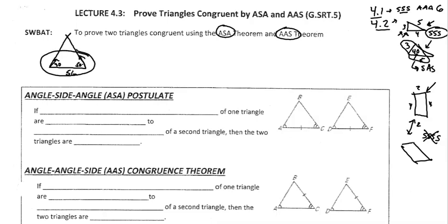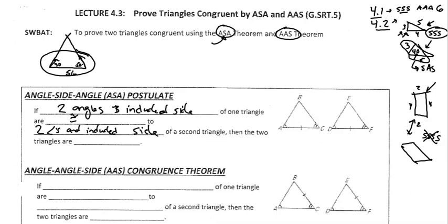There's only one possible triangle that can be created with an angle, a side, and then an angle. So you can now finish a proof with Angle-Side-Angle. How that works: if two angles and the included side — meaning the side has to be between the two angles — are congruent to two angles and the included side of a second triangle, then the two triangles must be congruent.